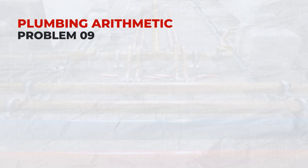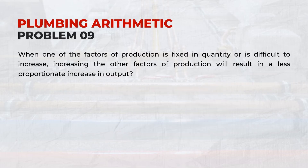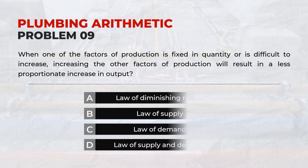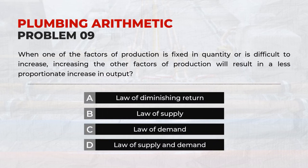When one of the factors of production is fixed in quantity or is difficult to increase, increasing the other factors of production will result in a less than proportionate increase in output. Answer: A. Law of Diminishing Return.